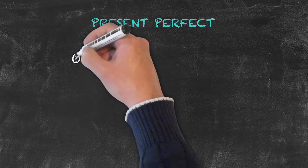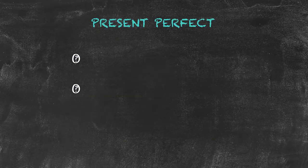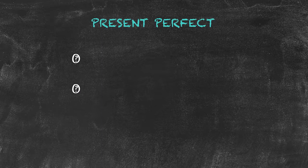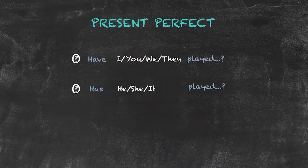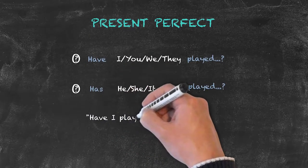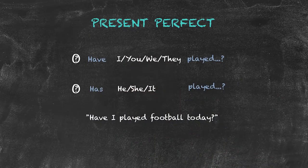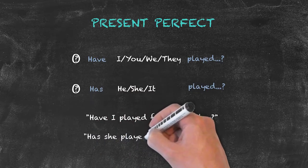For forming the question of the present perfect tense, again we're going to follow on with our form of inverting the subject and the helping verb. Now, we'll begin with have or has. So we end up with questions such as, 'Have I played football today?' Or 'has she played football today?'